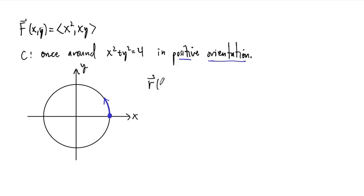And so our vector function r, this is a circle of radius 2, x squared plus y squared equals 2 squared. So this vector function is going to be r of t equals 2 cosine of t, 2 sine of t, and the domain of t is from 0 to 2 pi.